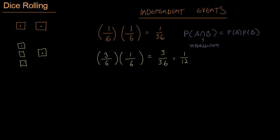So now let's draw a line here because we're about to do something slightly different. Up until now, we've been looking at the probabilities of and events. That being that both things have to happen. This die has to roll a one, and that die has to roll a one.